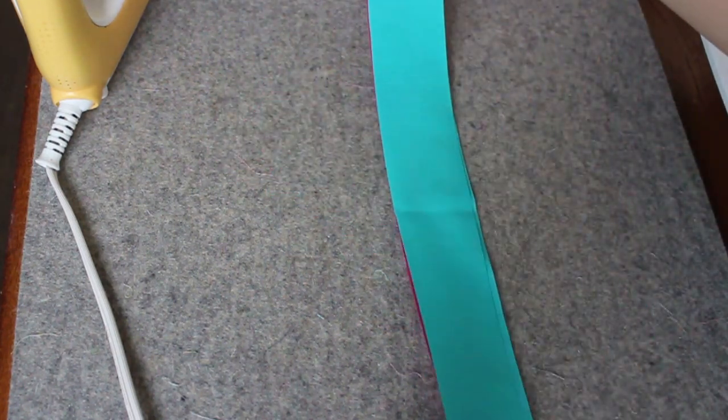Now I have my strips pieced and I can press everything towards the dark, which in this case is going to be my raspberry rose. There we go, I have this whole thing pressed. And now I'm going to sub-cut it into eight two-and-a-half inch chunks. The way I do that is I just grab my other mat here. I'm going to square off an end.